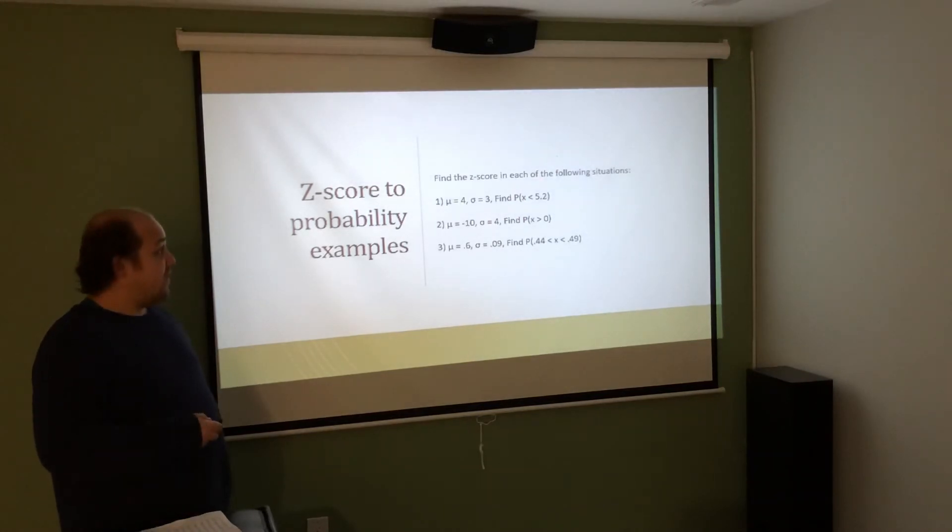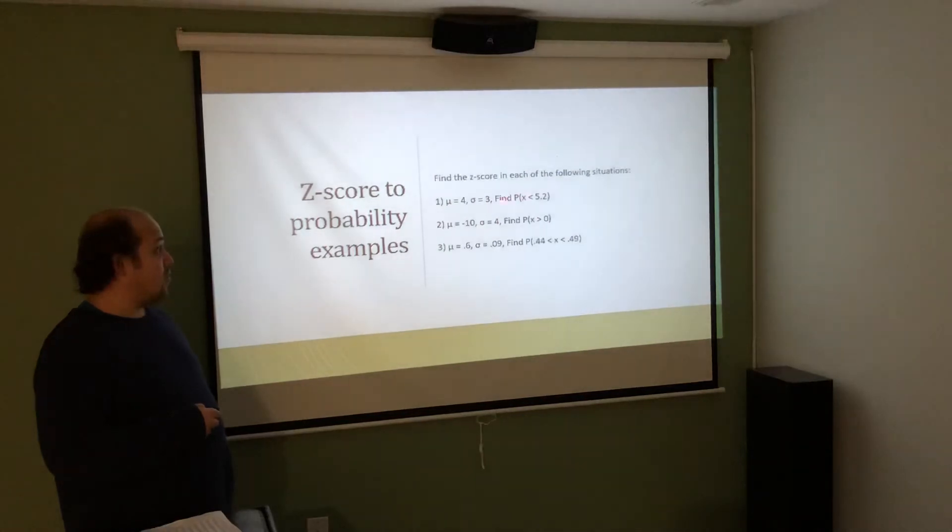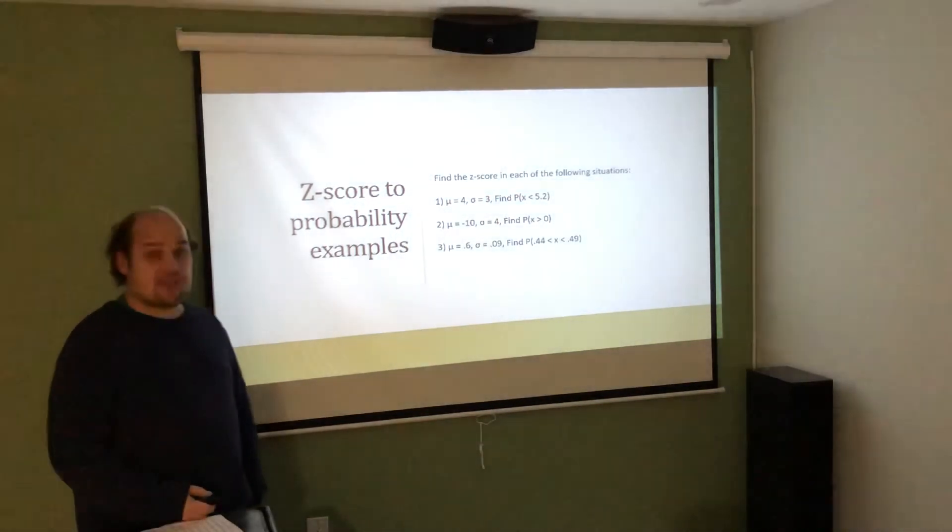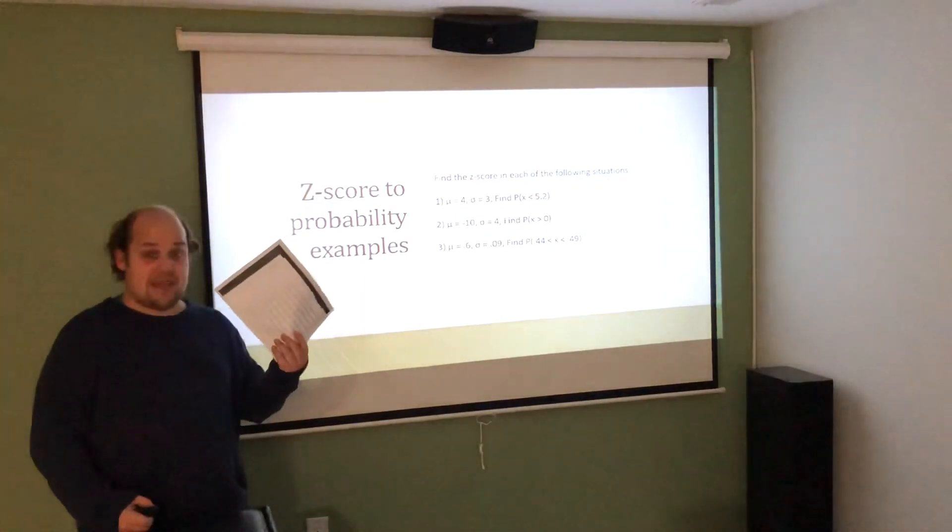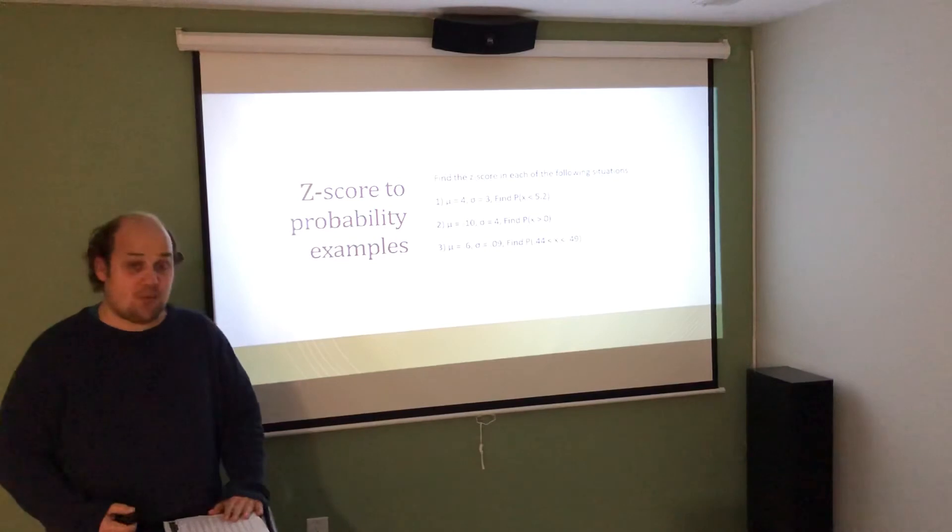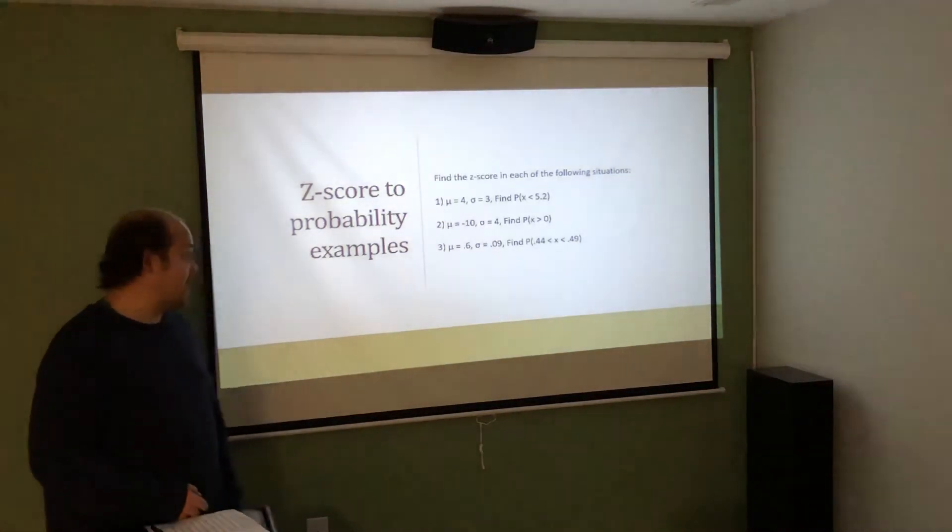Find the Z score in each of the following situations. Then, once we find the Z score, we're going to find the probability. So, to use these Z scores to find probabilities, basically, we look them up in the table the same way that we did in 6.1. We then consider whether it's a less than, more than, between question.